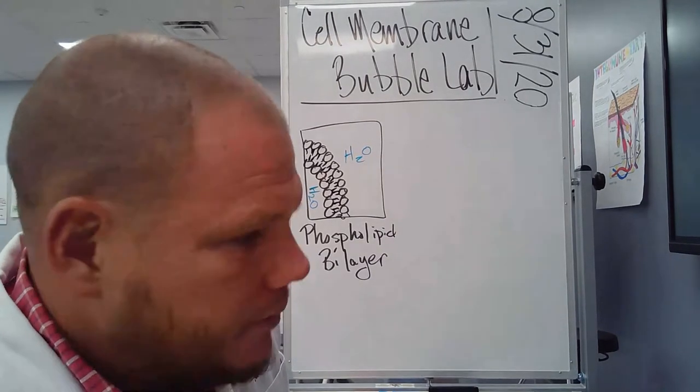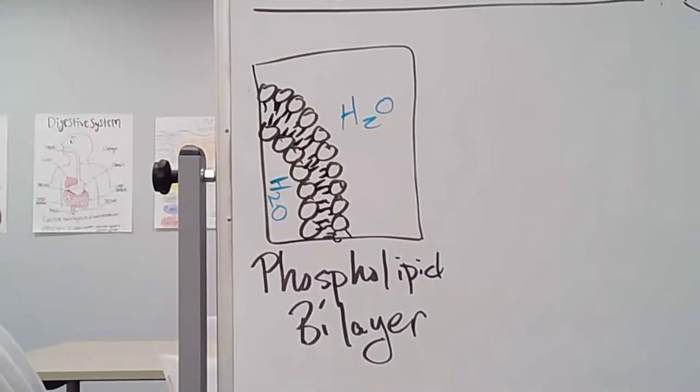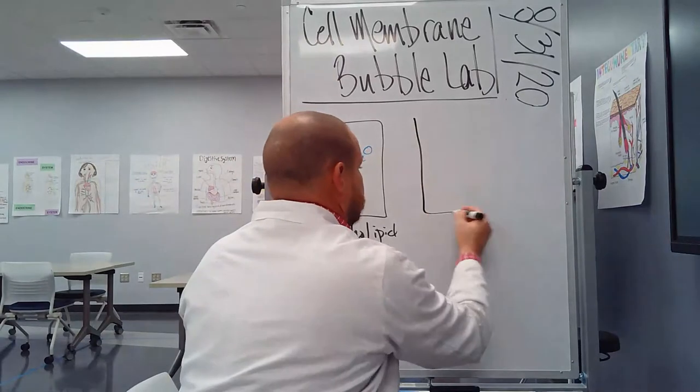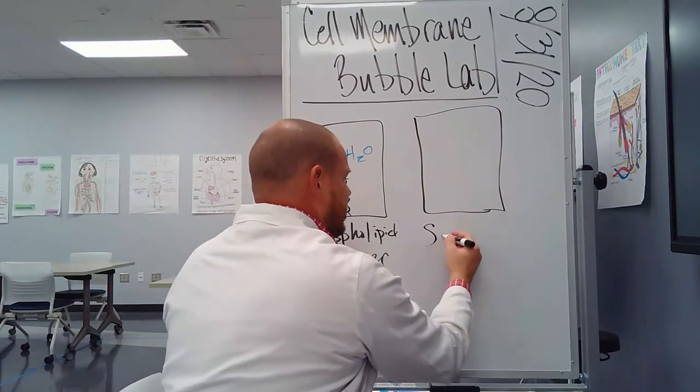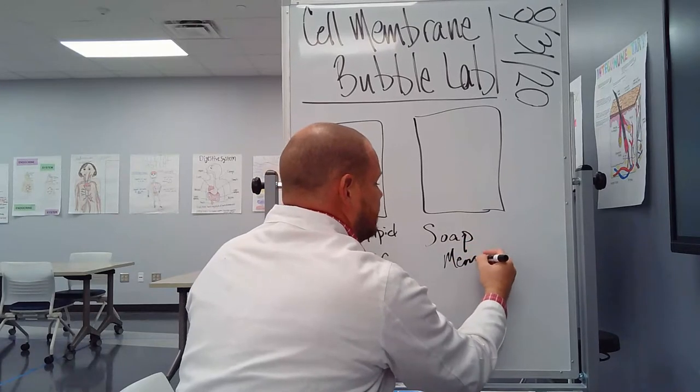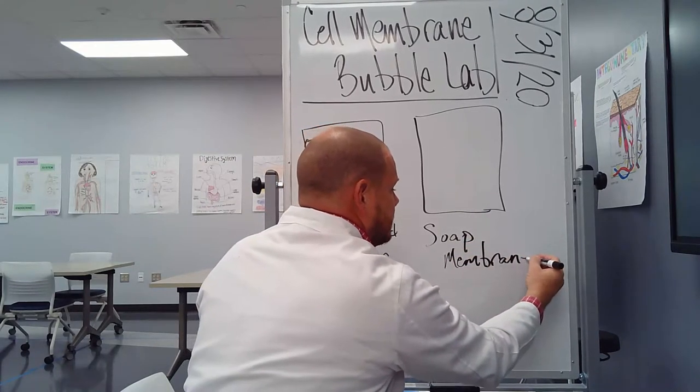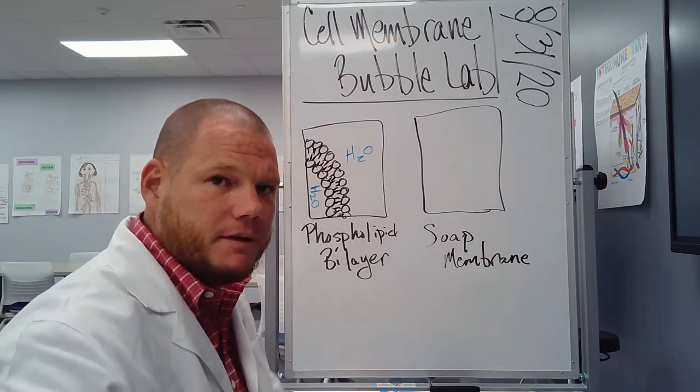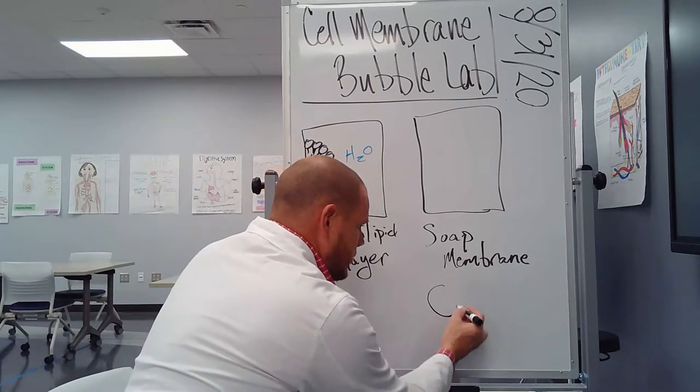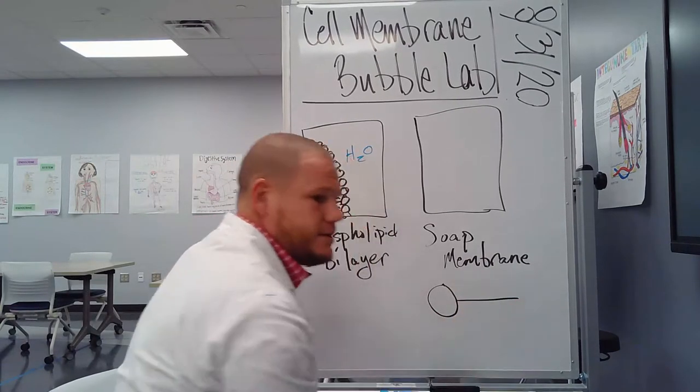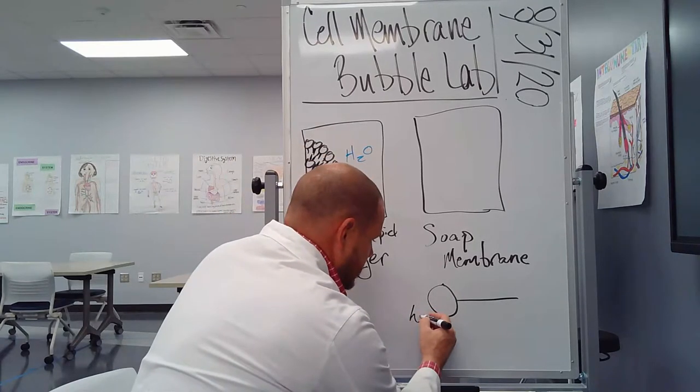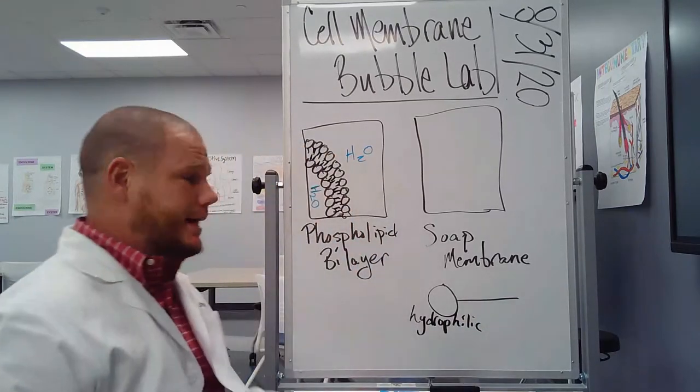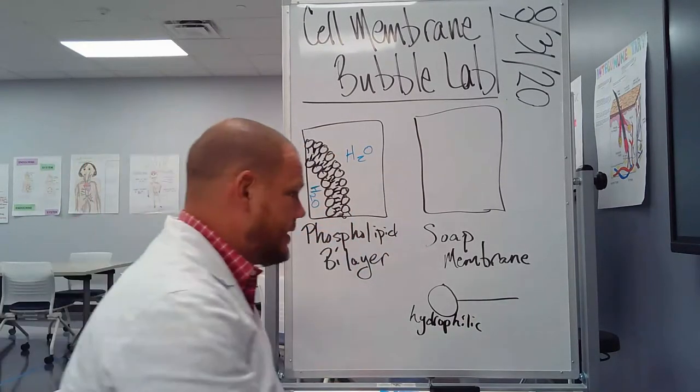Zoom in for you here. Alright. And so I'm going to draw another box. I'm going to draw it over here. And in here we'll draw a soap bubble membrane. So a soap molecule is similar to the phospholipid in that it has a head and one tail instead of two.